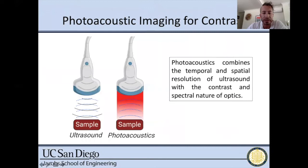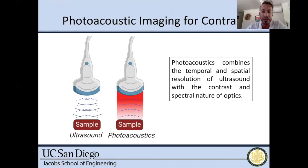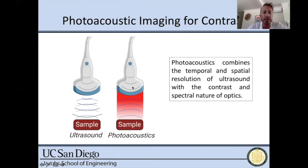Photoacoustic ultrasound combines the temporal and spatial features of ultrasound with the contrast and spectral nature of optics. We still get video frame rate — hundreds of frames per second — and very good spatial resolution deep into tissue, but we also get good contrast based on optics. In conventional ultrasound it's sound in, sound out; in photoacoustic ultrasound it's light in, sound out. The basic technology was described by Alexander Graham Bell over 100 years ago, but it's only been in the last 20 years that transducers and lasers have become fast enough for medical imaging.